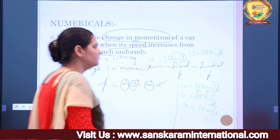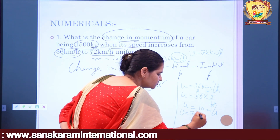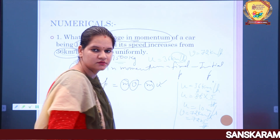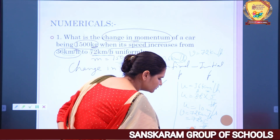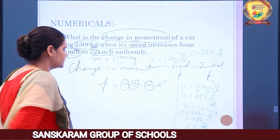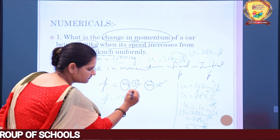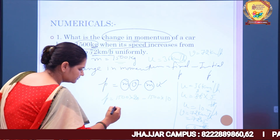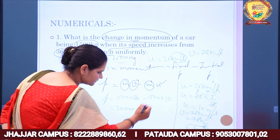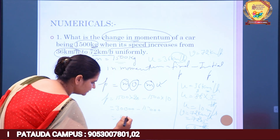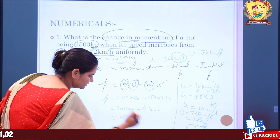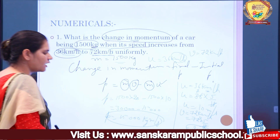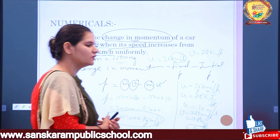Now applying the formula: change in momentum = m×v − m×u. Mass is 1500 kg, final velocity is 20 m/s, initial velocity is 10 m/s. So: 1500×20 − 1500×10 = 30000 − 15000 = 15000. The SI unit of momentum is kilogram meter per second. So the change in momentum is 15000 kg·m/s.